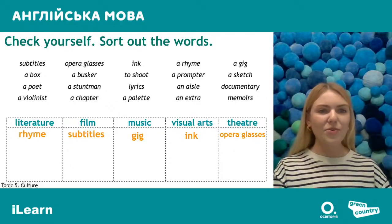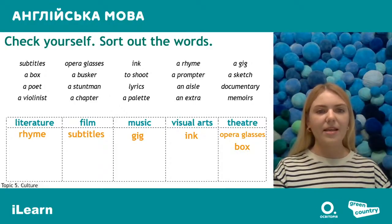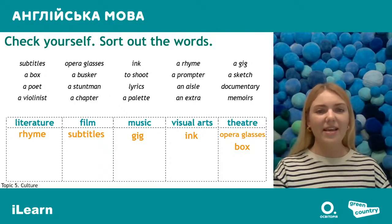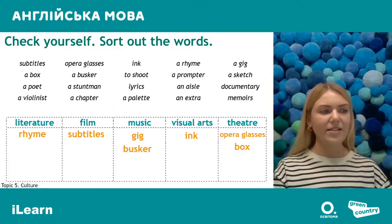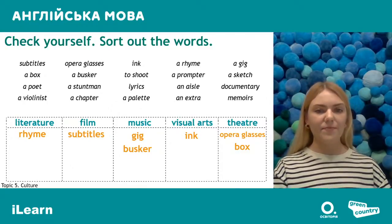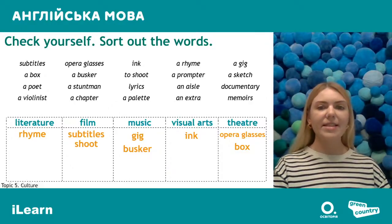'Box' — we know it as коробка, but it can also mean ложа — and we can have a box at the theater. 'Busker' is a street musician — a person who plays music in the street and can get money for it — and it's about music. 'To shoot' can be a synonym to film (знімати), and that goes to films — to shoot a film means знімати фільм.